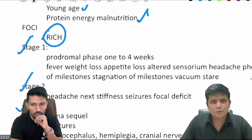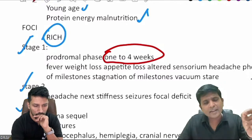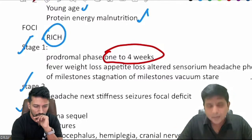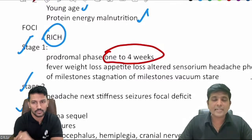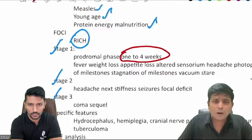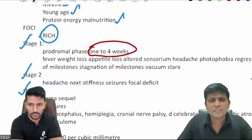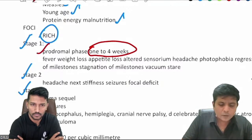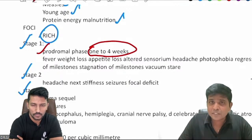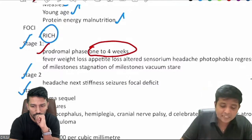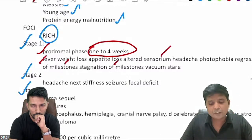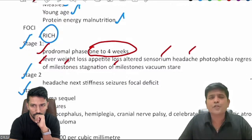Tubercular meningitis usually occurs in three stages. Stage 1 — the prodromal stage — can last 1 to 4 weeks. In this stage, there are no signs and symptoms suggestive of meningitis; manifestations are nonspecific, like fever, weight loss, appetite loss, with or without altered sensorium and headache. In a small child aged 6 months to 2 years, it is difficult to identify altered sensorium; the child cannot complain of photophobia or headache. A key feature is regression of milestones — the child who was able to walk, see, or hear suddenly loses those abilities. Stagnation of milestones may also occur.